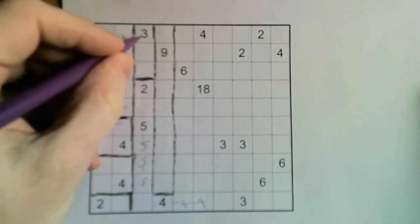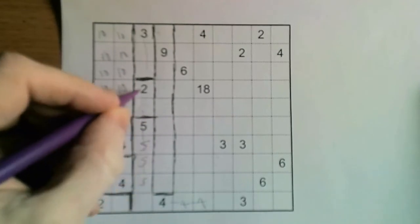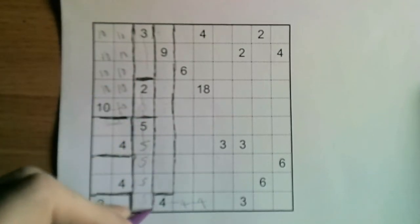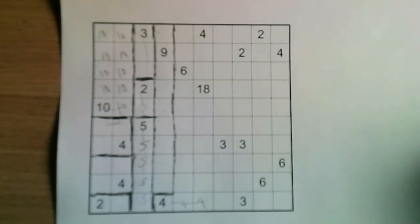The 3 has to be here, only option, and the 2 has to be here. And the 5 takes that cell down there, and it resolves itself down there. Okay, so that's this left side of the grid solved.